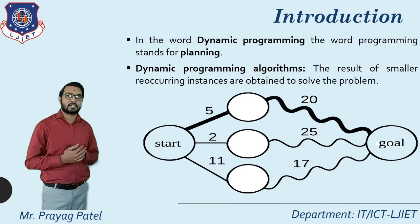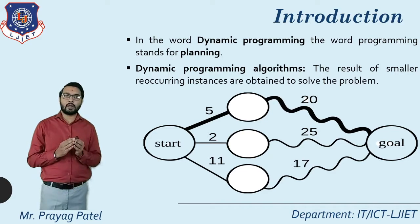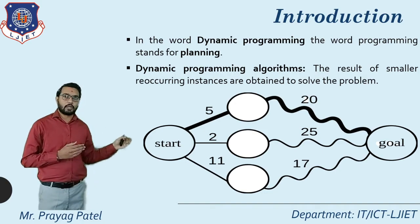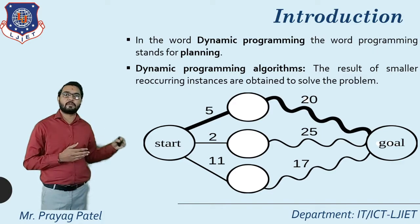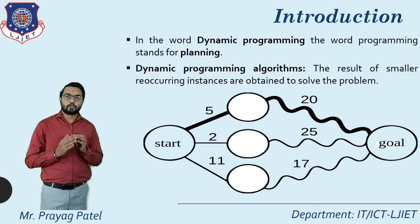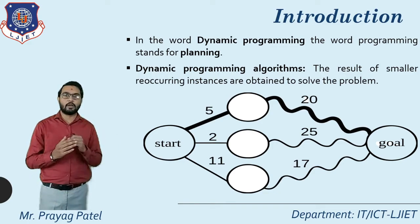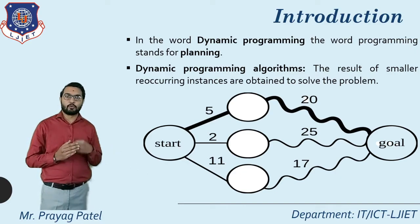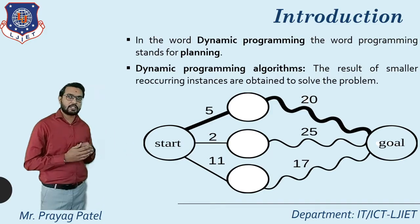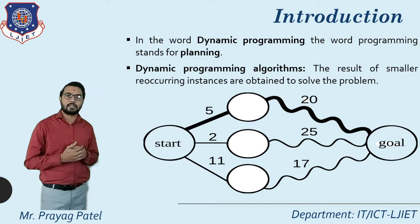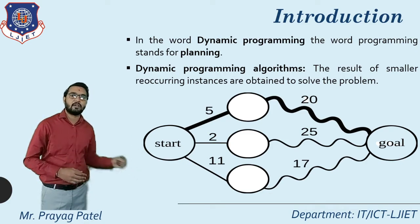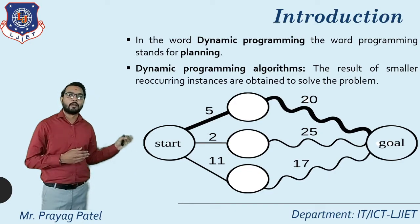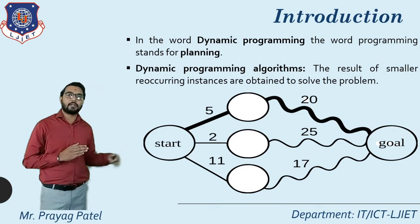Consider an example: a start node and a goal node. You want to find the path from start state to goal state using dynamic programming. Each small instance has distances: 5, then 2, then 11. Using greedy algorithm, it selects the locally optimal solution — minimum distance is 2 — from the three available distances of 5, 2, and 11.